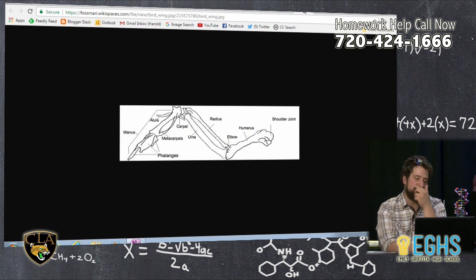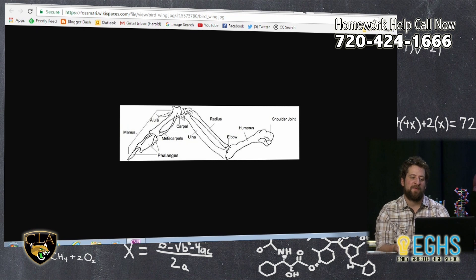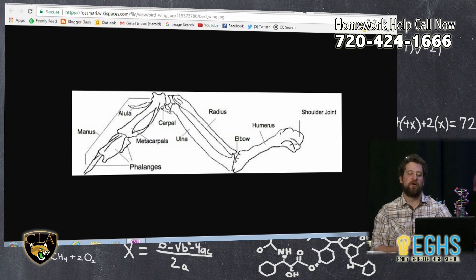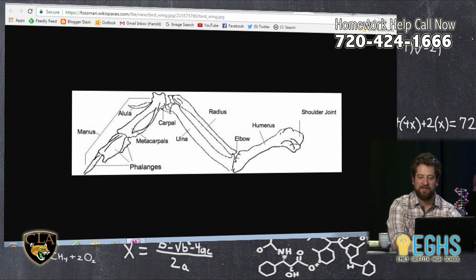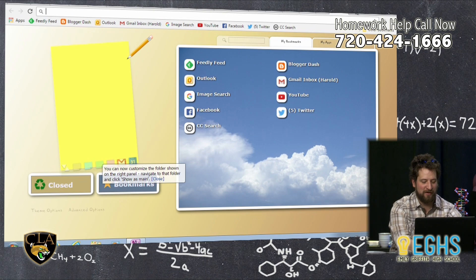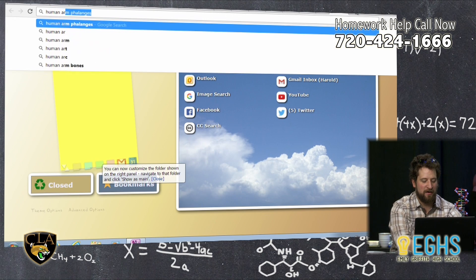So here's a generalized bird arm. We're going to just operate from the assumption that chicken arms are really similar to bird arms in general. And you'll notice, and actually what I need to do here, I need to get us a picture of a human arm bones entirely, because I meant to show you that in its entirety.